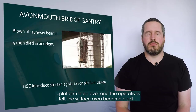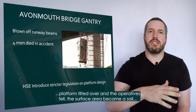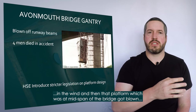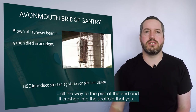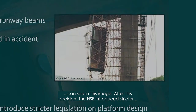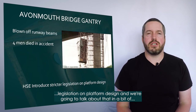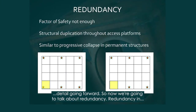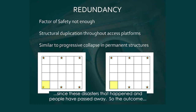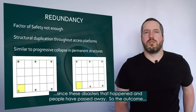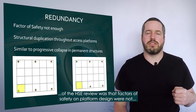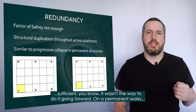After the platform tilted and the operatives fell, the surface area became a sail in the wind, and the platform — which was at mid-span of the bridge — got blown all the way to the pier at the end, crashing into the scaffold you can see in this image. After this accident, the HSE introduced stricter legislation on platform design. The outcome of the HSE review was that factors of safety on platform design were not sufficient and it wasn't the way to do it going forward.